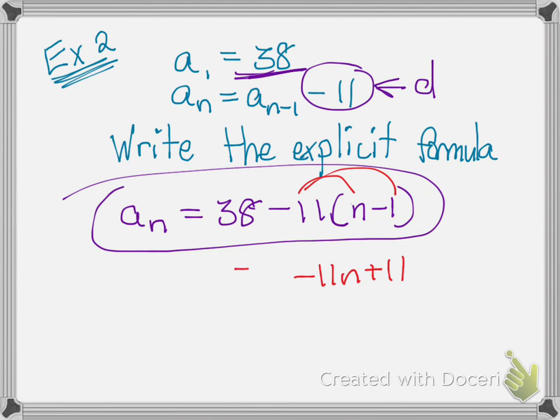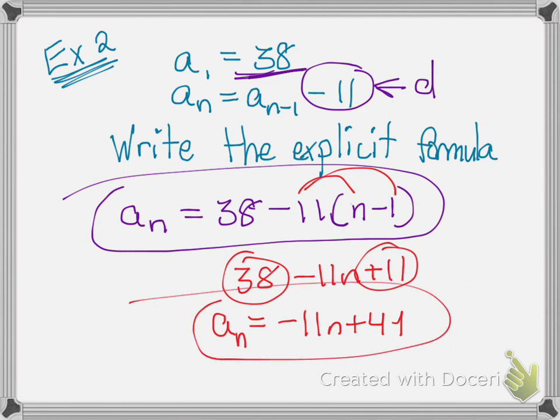And then bring down my 38, combine my like terms, 38 plus 11 will give me 49. Bring down my negative 11n, and that's my explicit formula written in slope intercept form. And that's it!